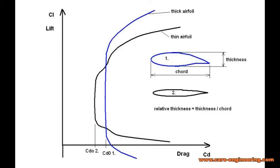The first airfoil variable we need to decide on is the thickness. One aspect is purely structural: the thicker the airfoil is, the lighter the spar can be. Some applications even require a minimum thickness to be structurally feasible at all. Aerodynamically, a thick airfoil has a higher minimum drag (shown here as CD0), but maintains that drag over a larger range of CL than a thin airfoil. If you are designing an airplane without flaps, a thick airfoil is the best choice.